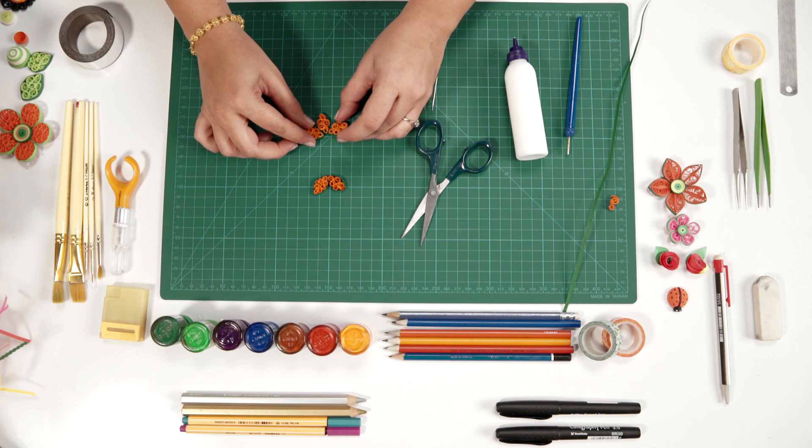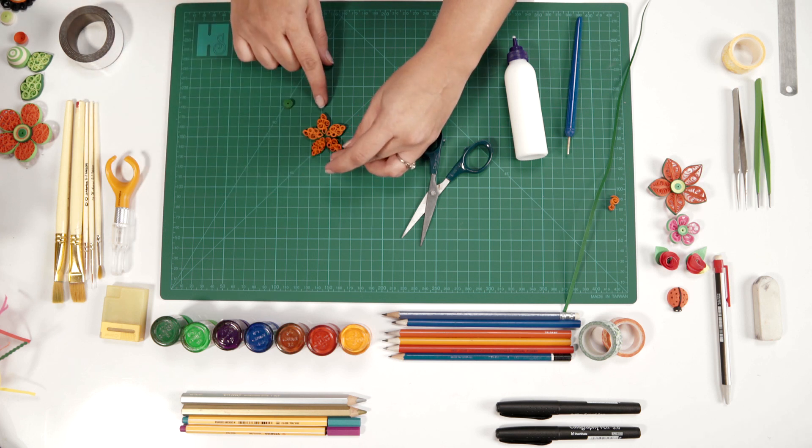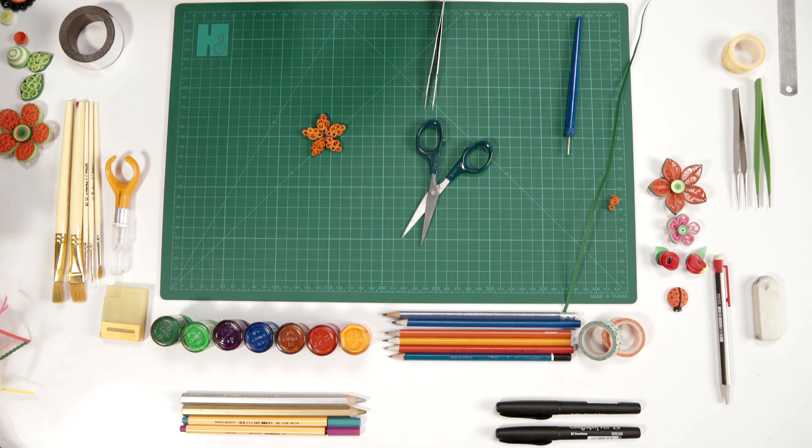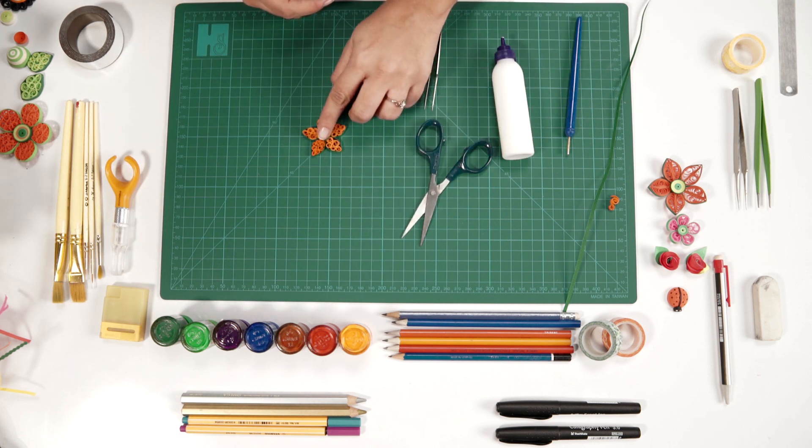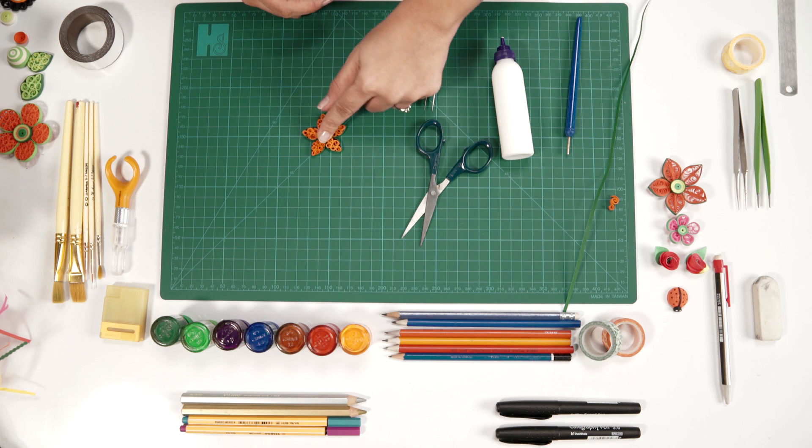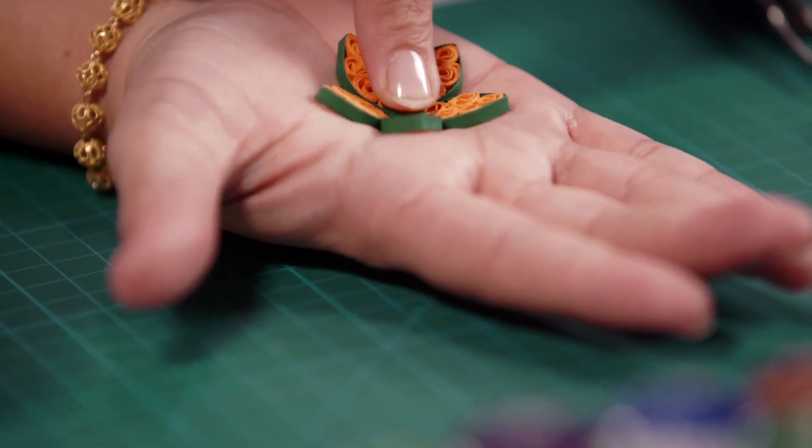Put these all together, apply some glue on the bud, place it on top of this, press it in properly. Hold it on your palm and press it down to give it a nice 3D effect.